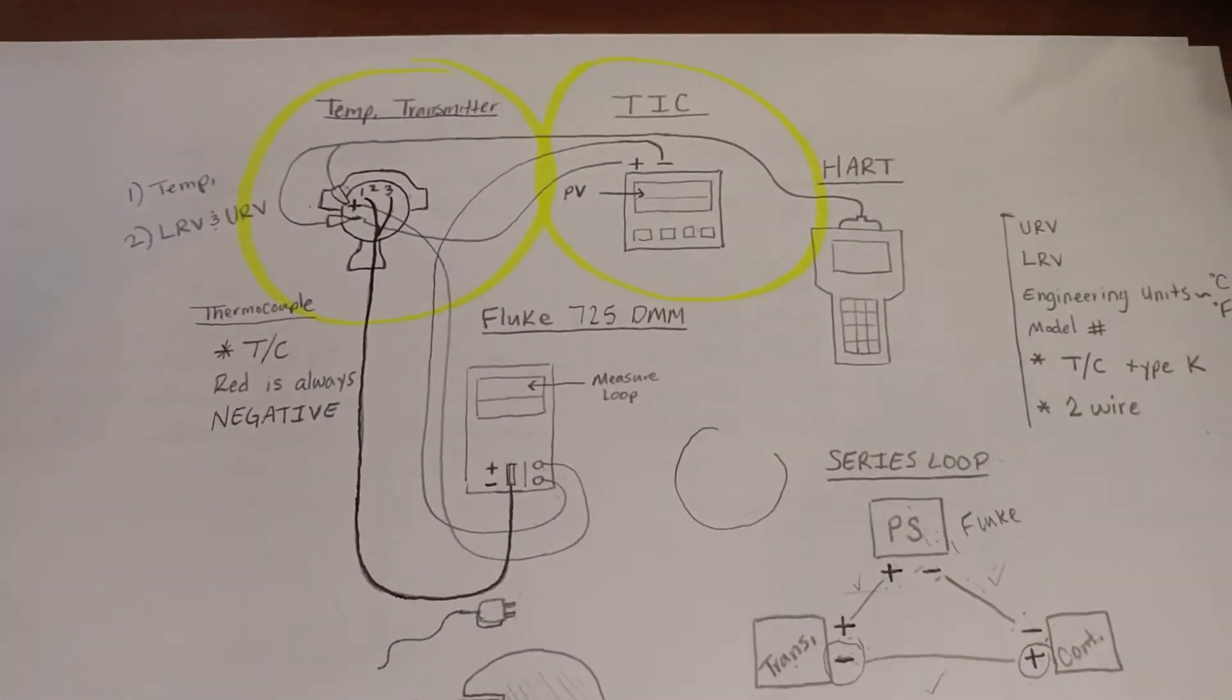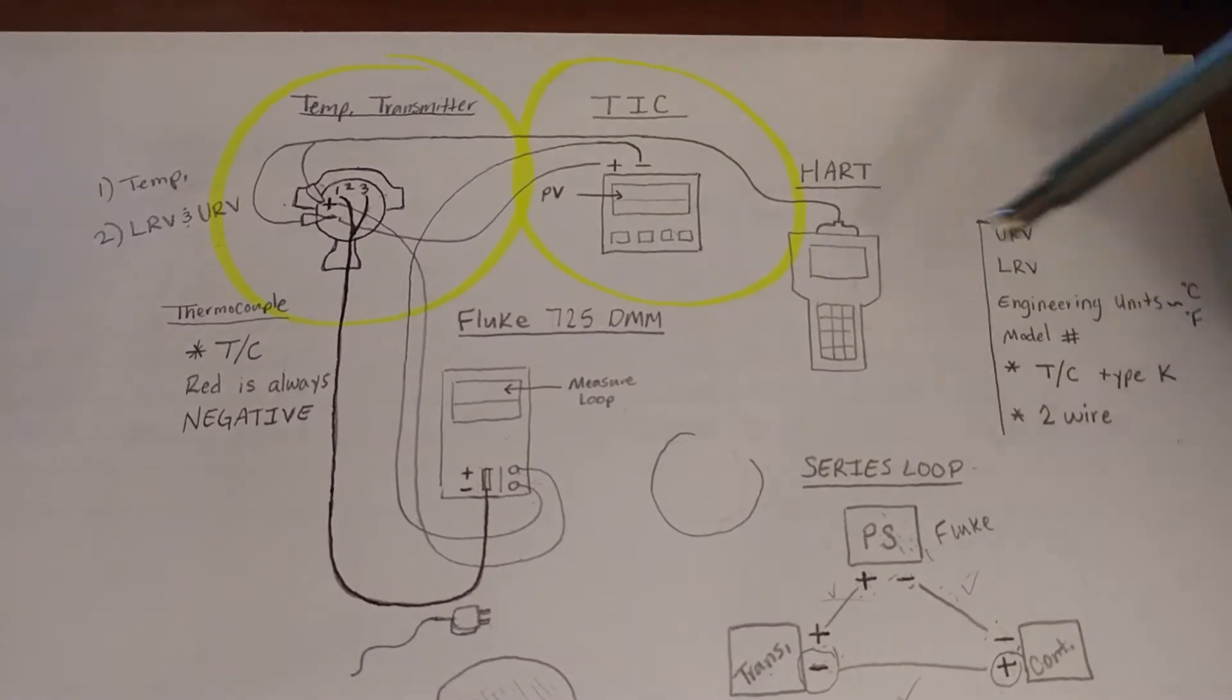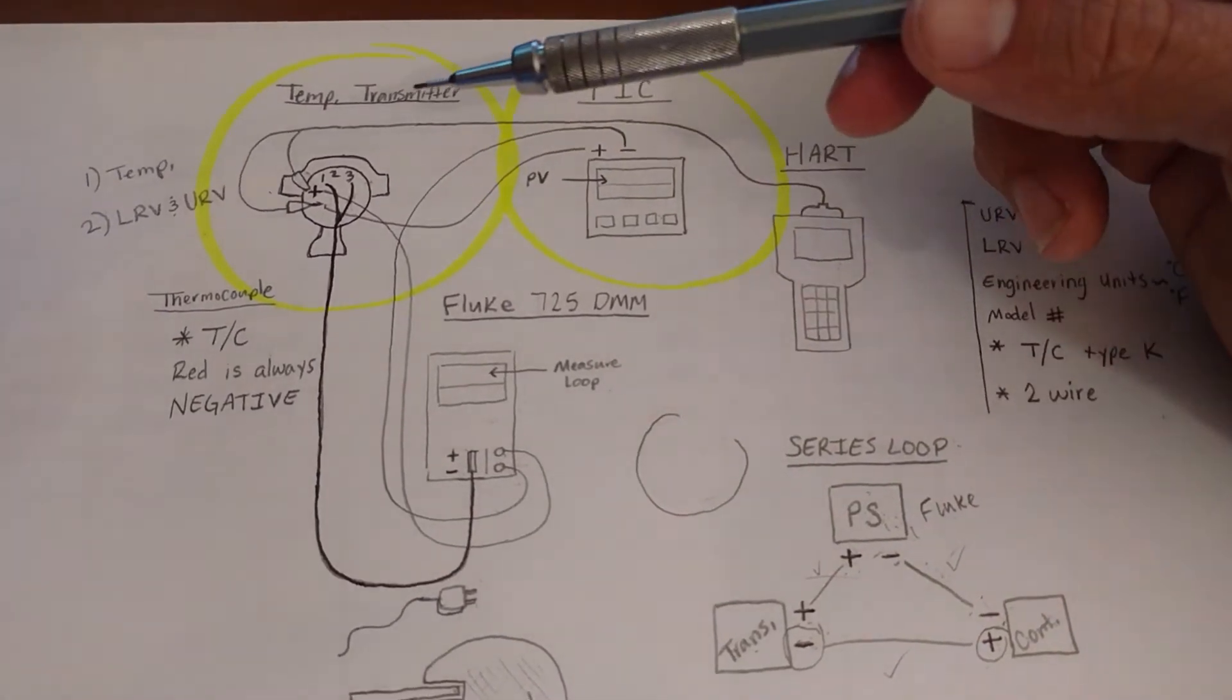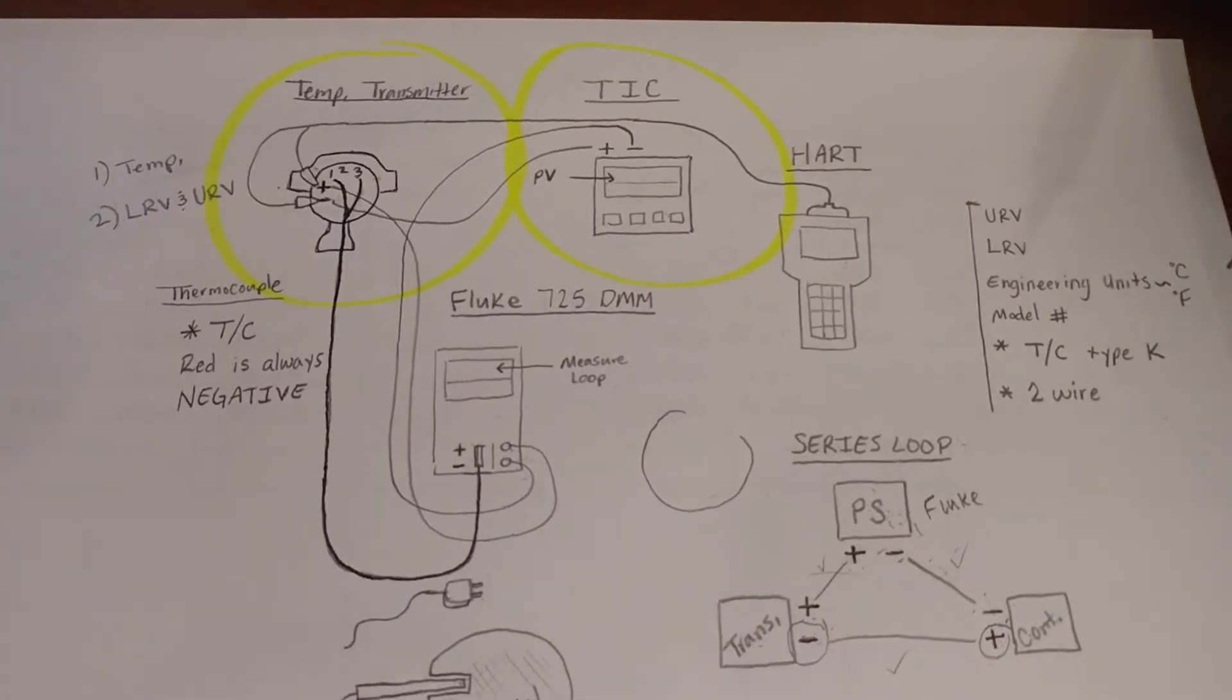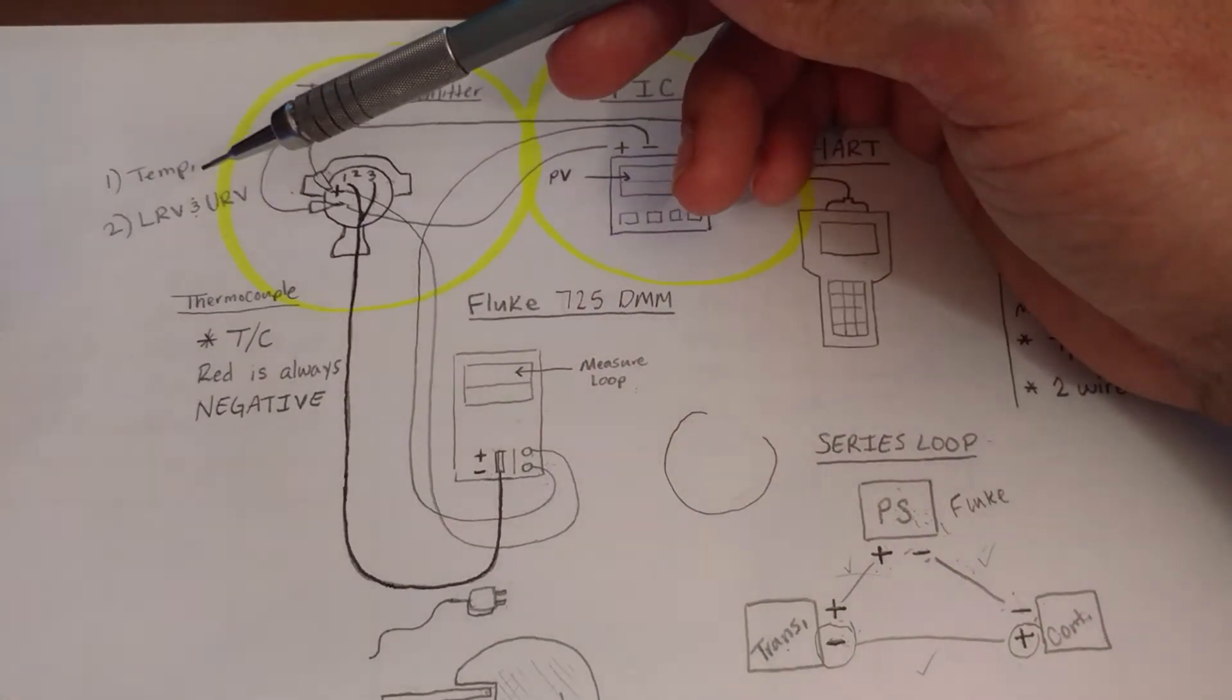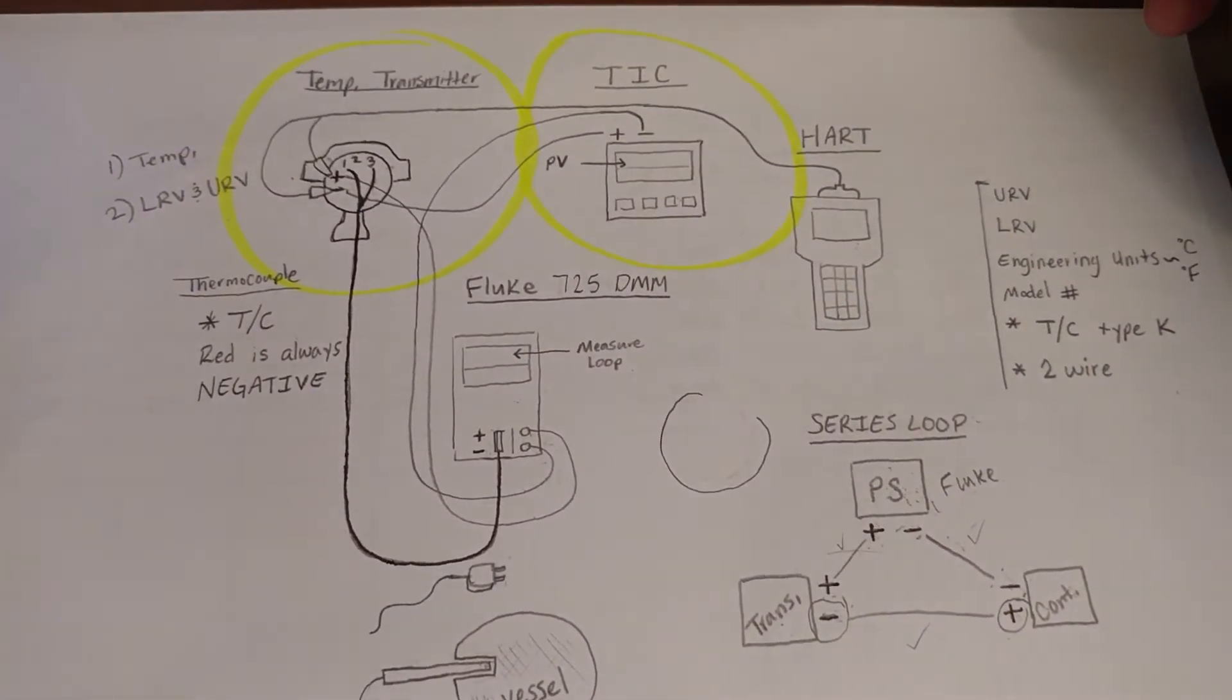Now, in order for us to calibrate and test these instruments, we need other devices. And we know that this is a temperature transmitter. So it's going to need two things in order to transmit a signal. We know it's going to need temperature value and a lower range value and an upper range value. So how are we going to get that?